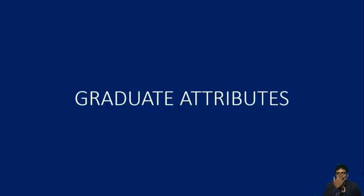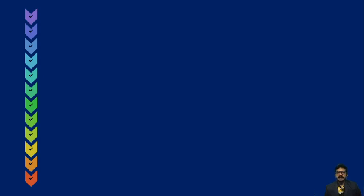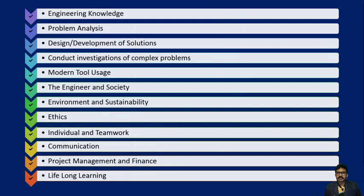As per the National Board of Accreditation, there are 12 graduate attributes, and this is the only subject in engineering where all 12 graduate attributes are mapped. These are: engineering knowledge, problem analysis, design and development of solutions, conduct investigation of complex problems, modern tool usage, engineer and society, environment and sustainability, ethics, individual and teamwork, communication, project management and finance, and lifelong learning.